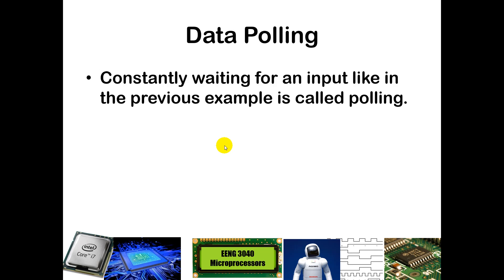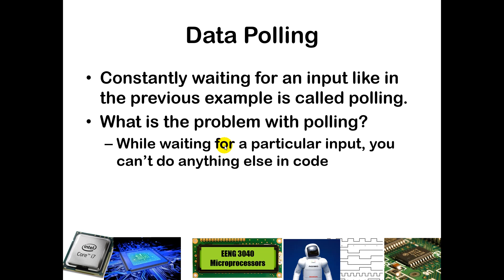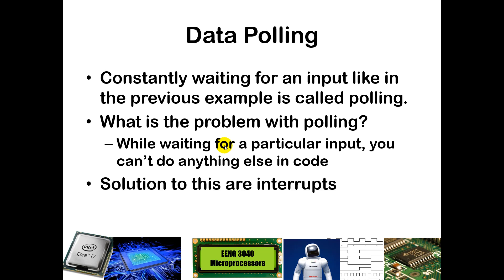What this technique is known as is data polling — constantly waiting for an input by checking repeatedly: is it set? The problem with polling is that while you're waiting you can't do anything else; you're stuck in that loop waiting for the value to become logic 1. This really wastes a lot of time. The solution to data polling is to use an interrupt, which we will see examples of in some future lectures.